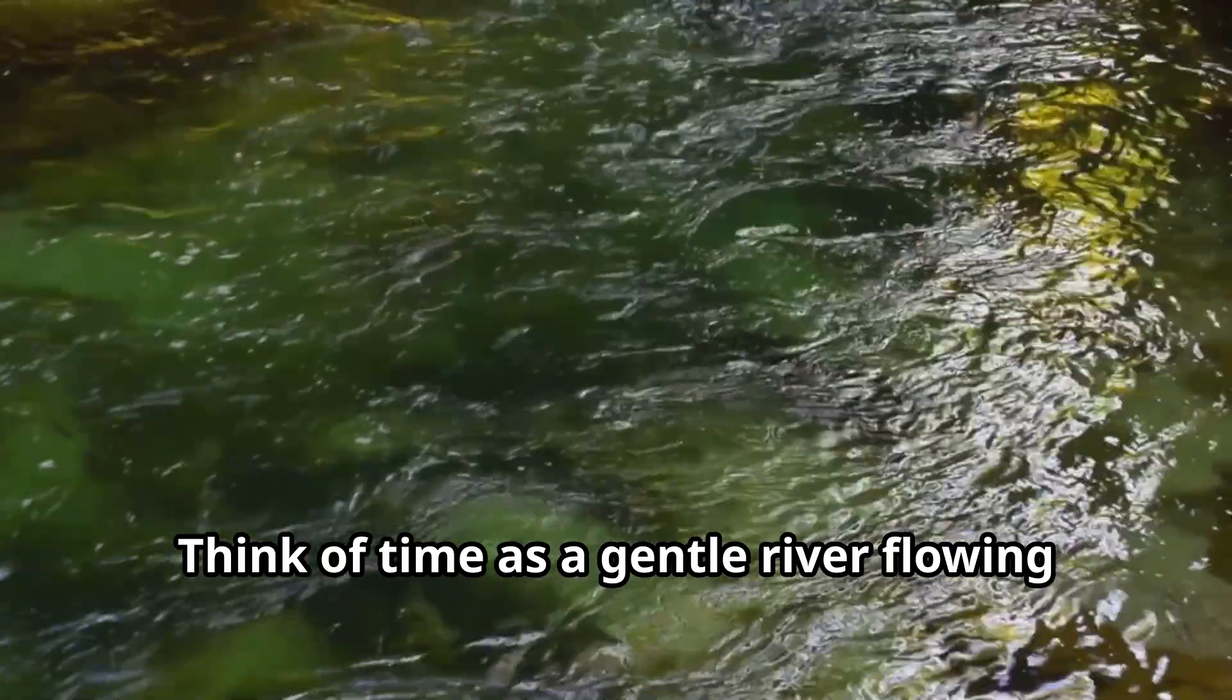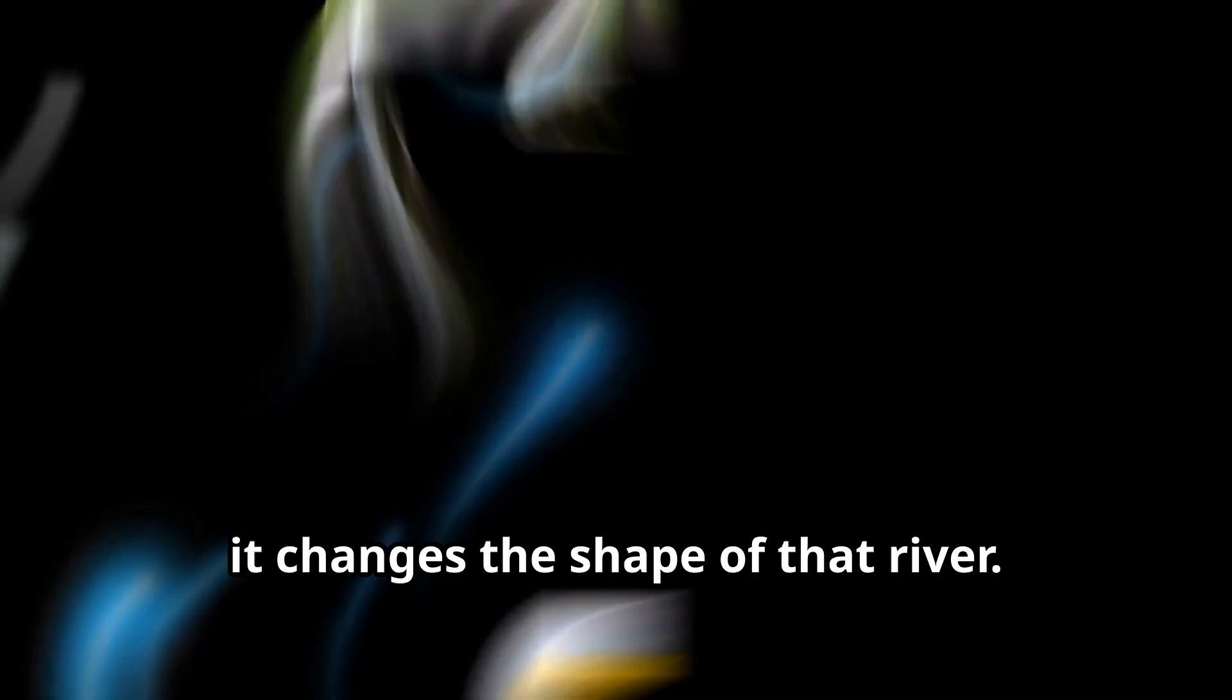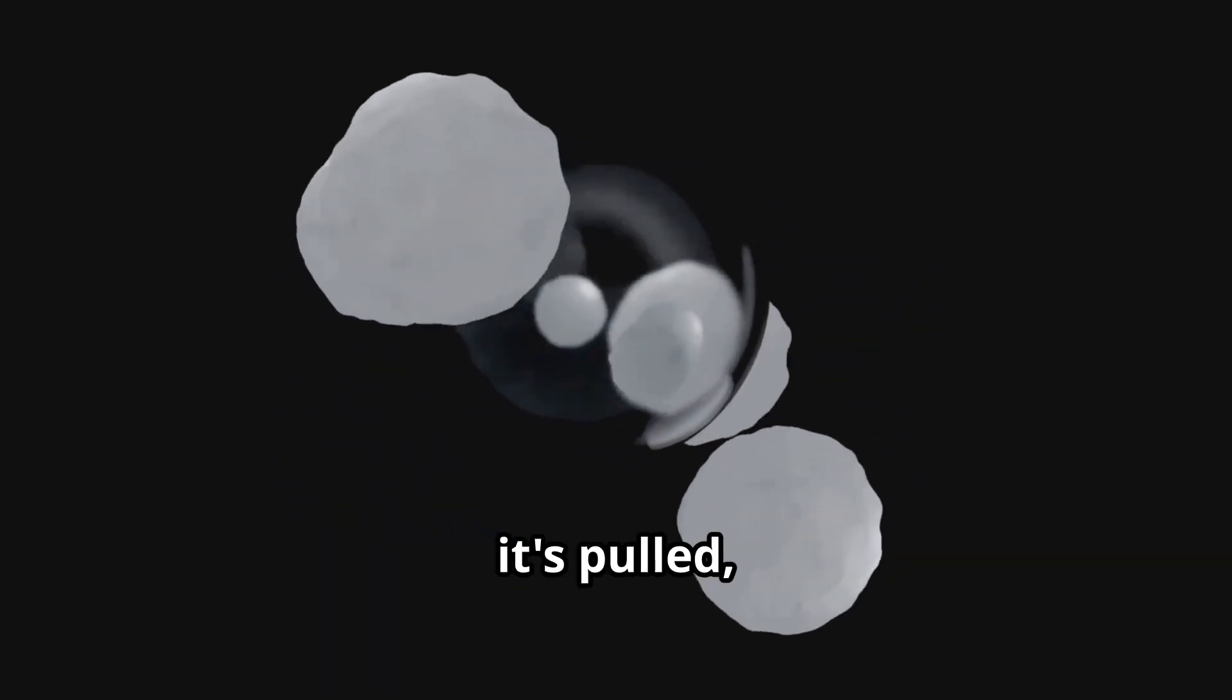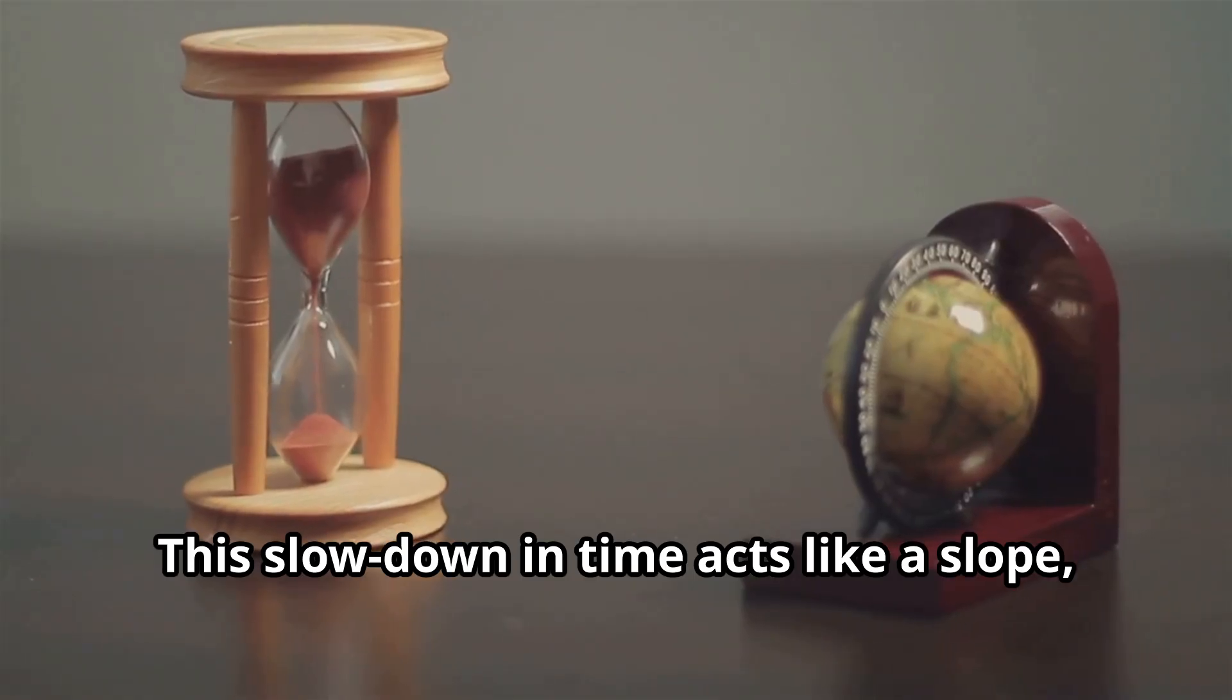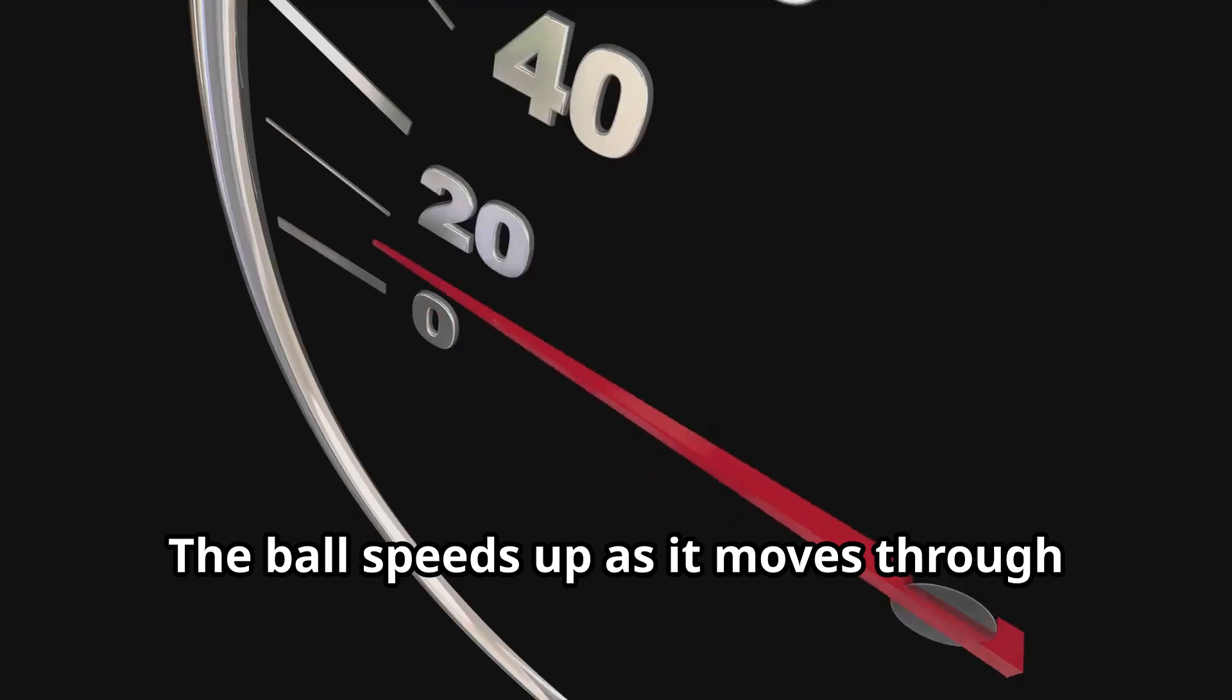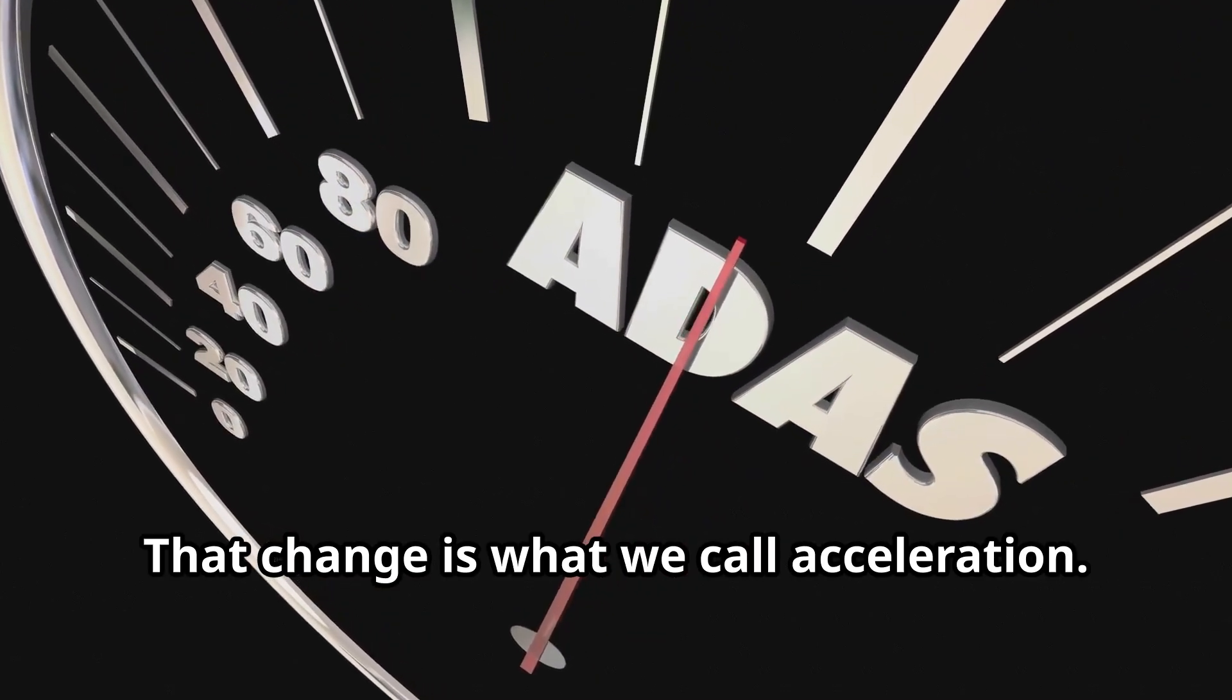Think of time as a gentle river flowing through the universe. When there's a massive object like Earth sitting in space-time, it changes the shape of that river. The ball moves toward Earth, not because it's pulled, but because it's following the easiest path through the flow of time. This slowdown in time acts like a slope, guiding the ball downward. The ball speeds up as it moves through regions where time is getting slower and slower. That change is what we call acceleration.